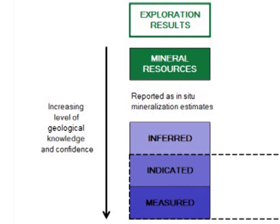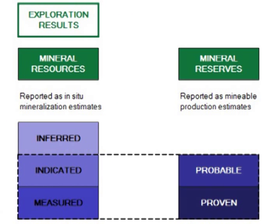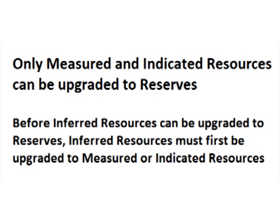You may remember from the video on mineral resources that resources are split into three categories based on the level of confidence in the results from the testing: measured mineral resources, indicated mineral resources, and inferred mineral resources. Mineral reserves have only two categories based on level of confidence: proven reserves and probable reserves. The level of confidence in inferred mineral resources is not high enough to directly convert inferred resources to reserves, without inferred resources first being upgraded to measured or indicated resources through more testing.